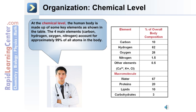The human body is made up of some key elements: carbon, hydrogen, oxygen, and nitrogen. These are shown in the table on the right along with their percent overall body composition. Also present are macromolecules such as water, proteins, lipids, and carbohydrates. These main elements account for approximately 99% of all the atoms in our body.